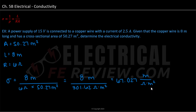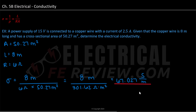Let's simplify our units. We have meters in the numerator and meters squared in the denominator, giving us 1 divided by ohm·meters. Simplifying 1 over ohm gives us Siemens, so the units become Siemens per meter. Our final answer is 67.027 Siemens per meter. This concludes our video on electrical conductivity — thank you for watching.